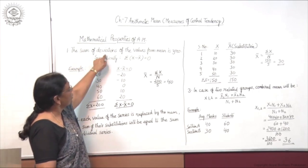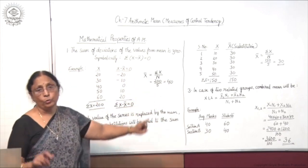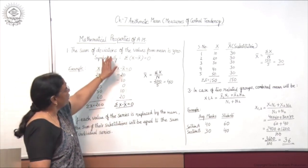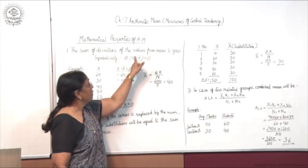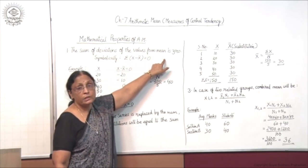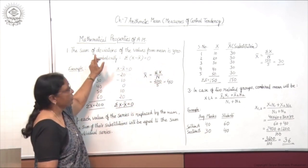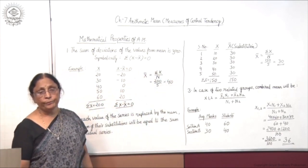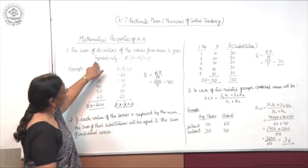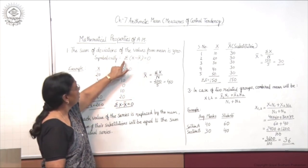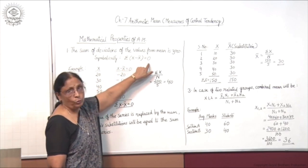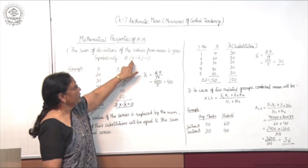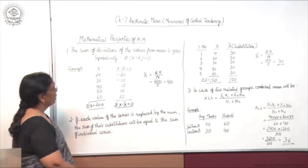The first property is: the sum of deviations of the values from the mean is 0. That means when we take out the deviations from the assumed mean it will not be 0, but when we take out the deviations from the actual mean, then sigma of it is always 0. Symbolically, sigma (x minus x-bar) equals 0. We want to prove that deviations taken from actual mean are always equal to 0 in total.